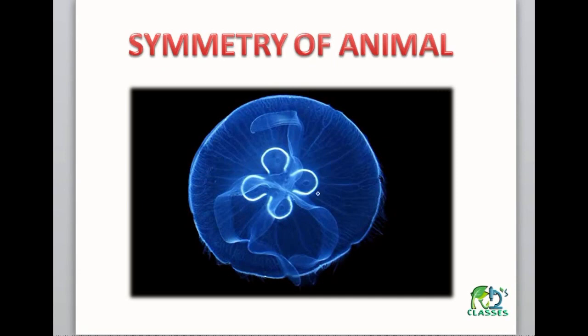If you see this area — this area is Porifera — in Porifera we can normally see radial symmetry. So this is the plane and this is the area.